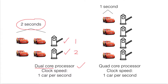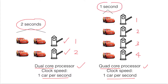If we continue to increase the number of tows — that means increase the core to a quad-core processor — and the clock speed remains the same at one car per second, each tow can process one car per second. Therefore, if we can split the program into four separate sub-programs, we can process all these sub-programs in one second. Of course, this is a very ideal case, because in actual implementation this could be 1.1 or 1.2 seconds, since there is overhead to split the program into four sub-programs and then recombine after processing.